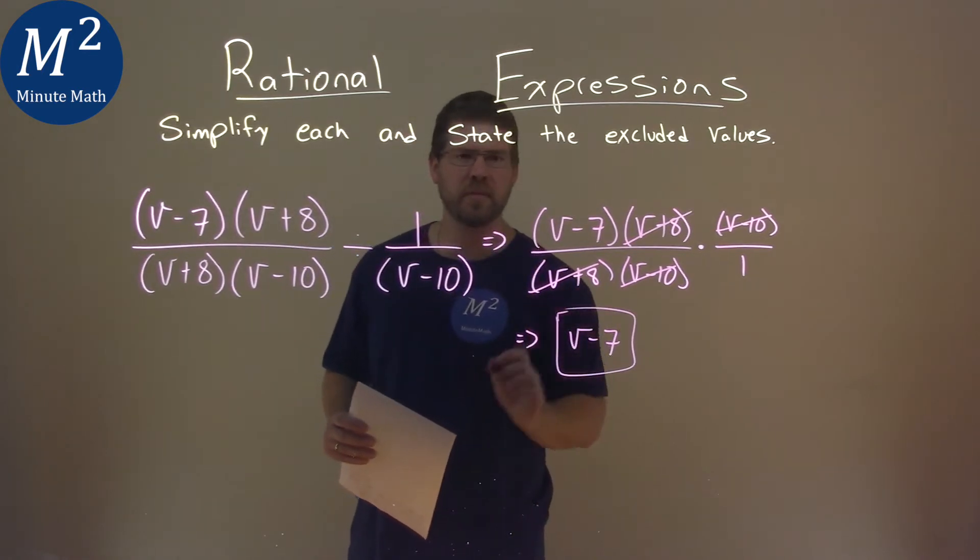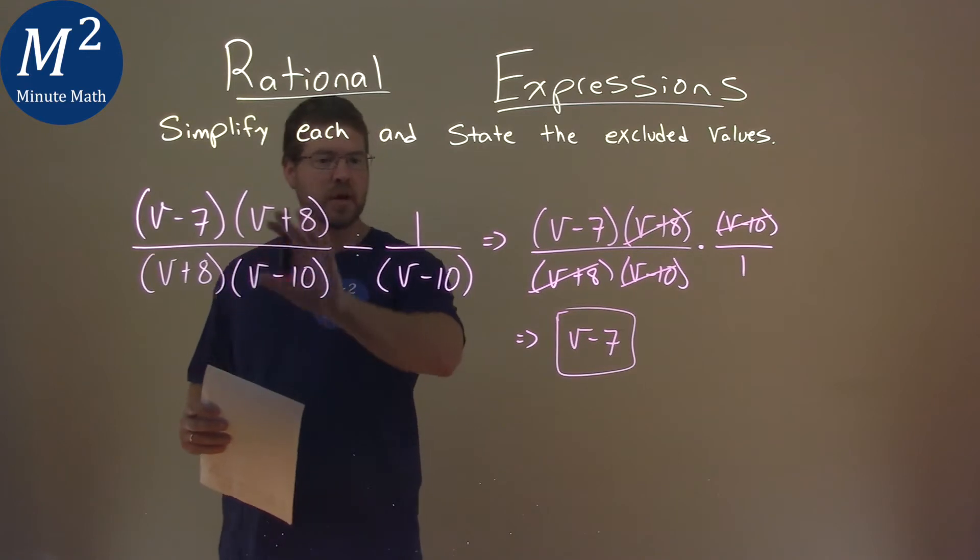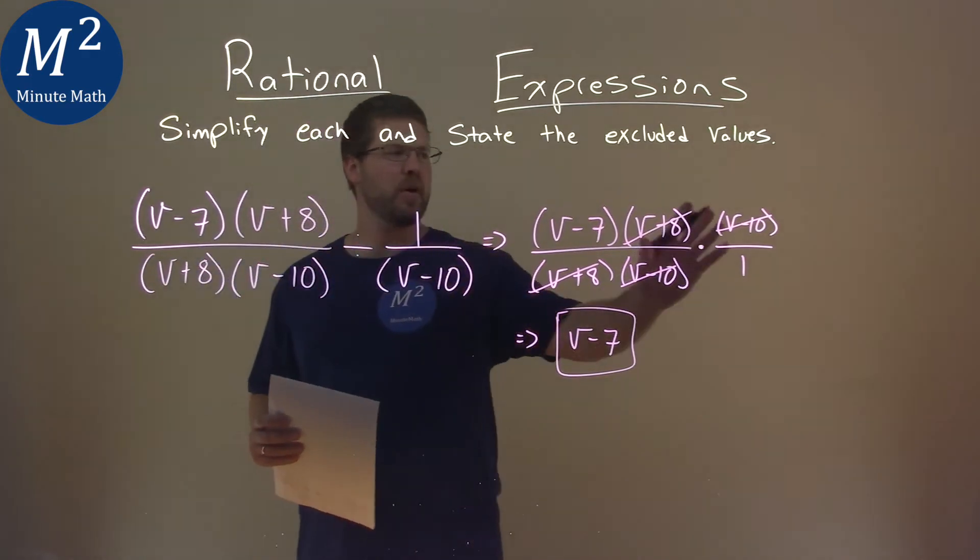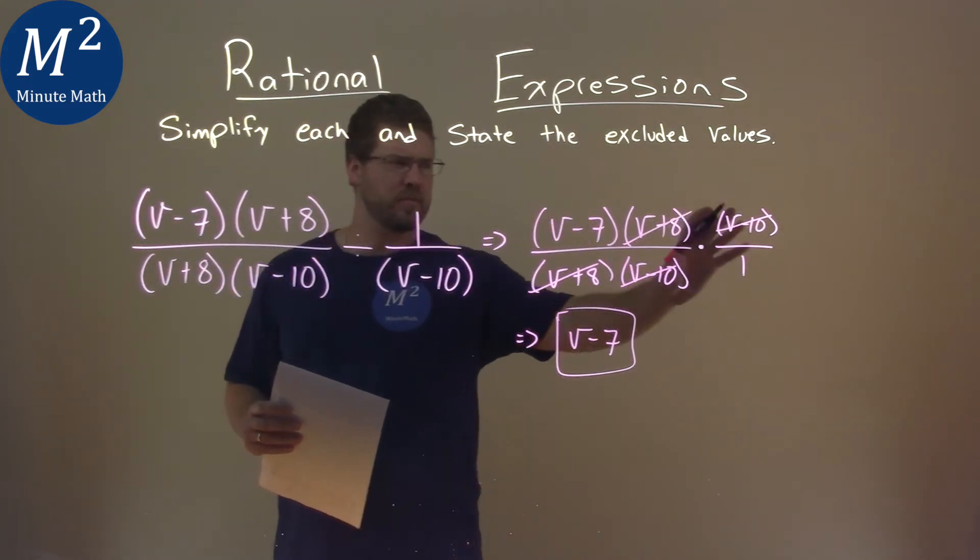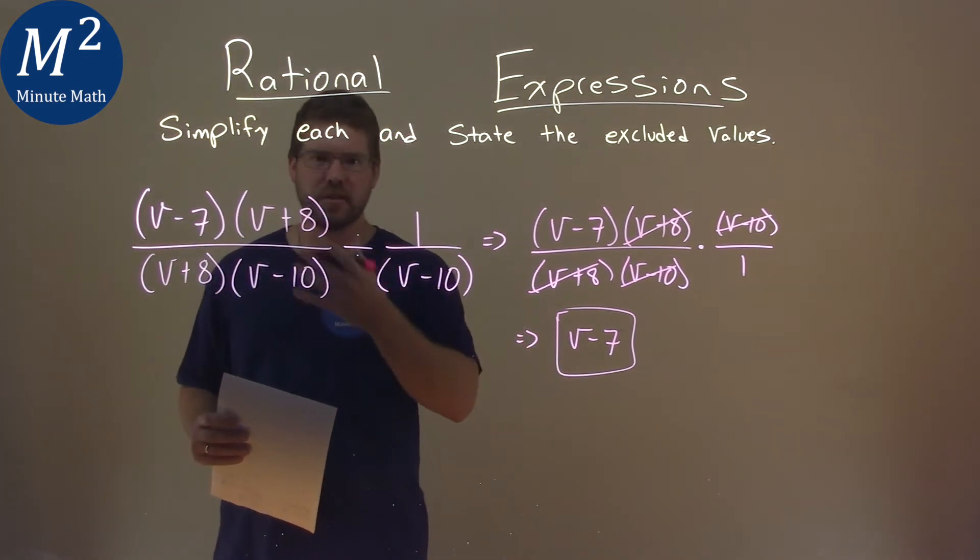But we need to find the excluded values. So we actually have to look back to our original expression here, and we'll take in part with what's going on when we flipped over the v minus 10. With rational expressions, we can't have a 0 in the denominator. So that's what we're looking at here.